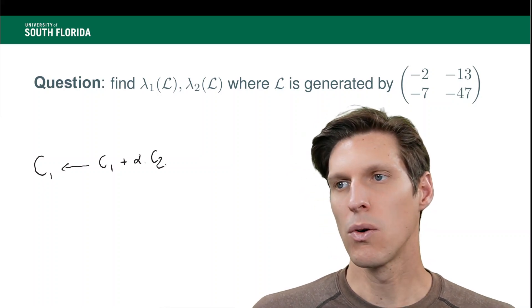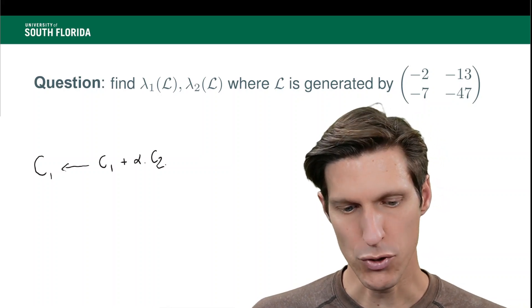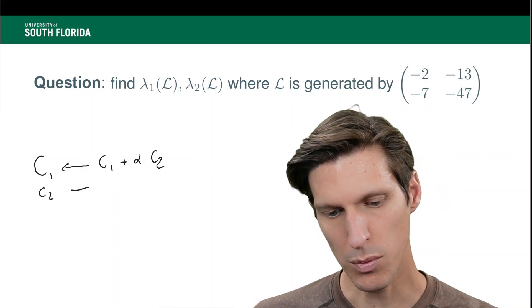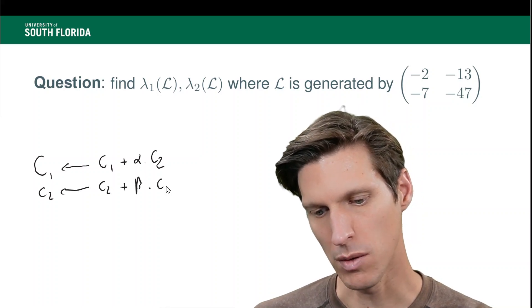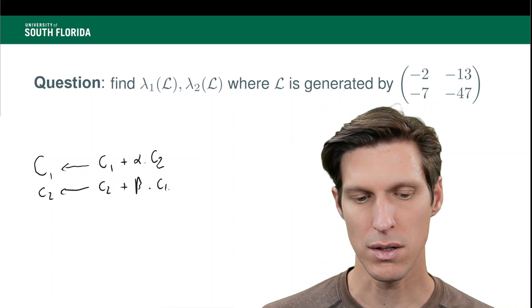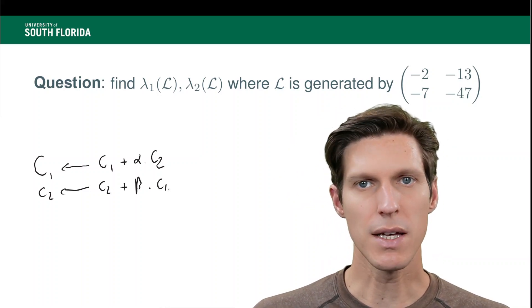I guess in this case, I will do that with column 2. I'm going to do column 2 replaced by column 2 plus beta times column 1. So these are operations that will change their basis into a different basis.